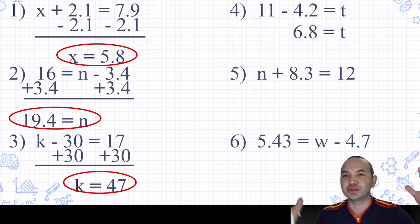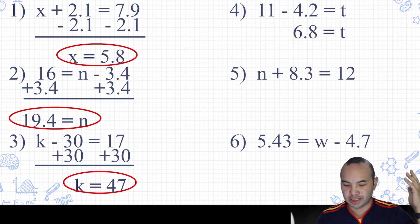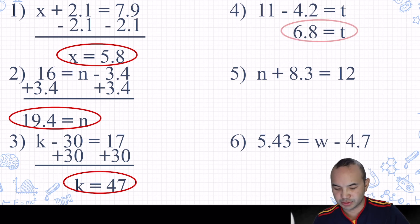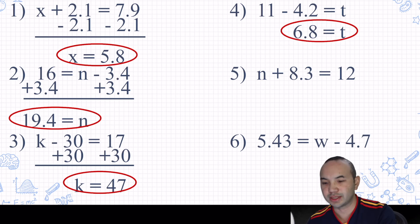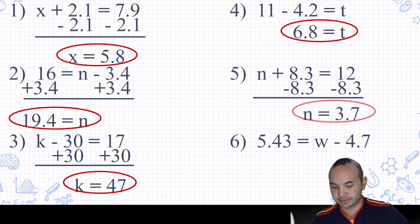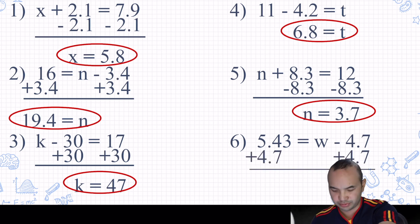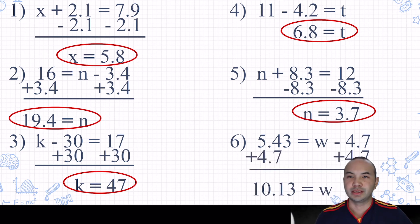Number 4 is a trick question — just combine like terms. Subtract 11.0 minus 4.2, and that equals T. For the next one, 8.3 is being added, so use the subtraction property of equality. 12.0 minus 8.3 equals 3.7. For the last one, you're subtracting 4.7, so add 4.7 to 5.43 and you end up with 10.13.